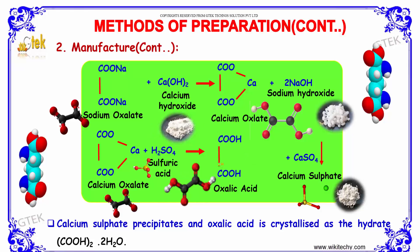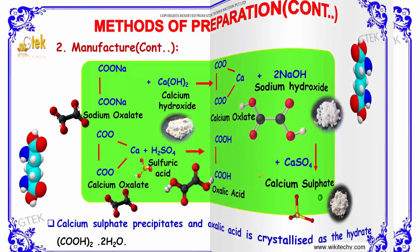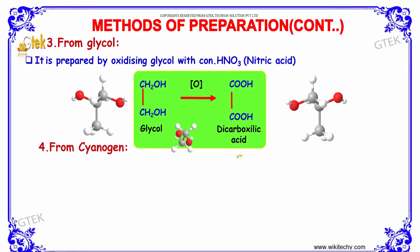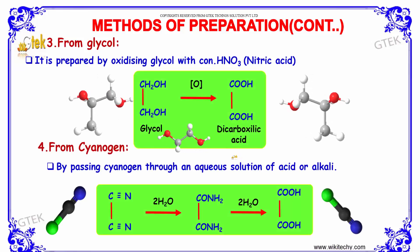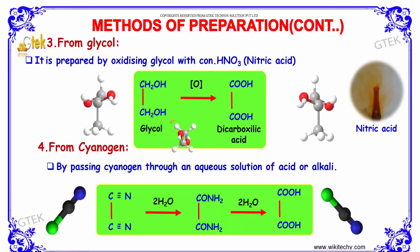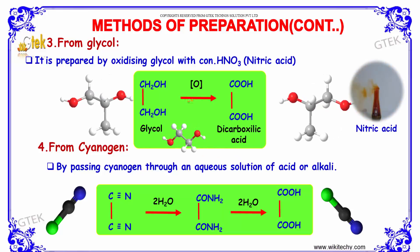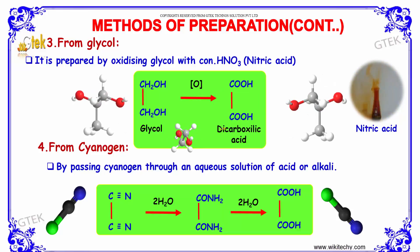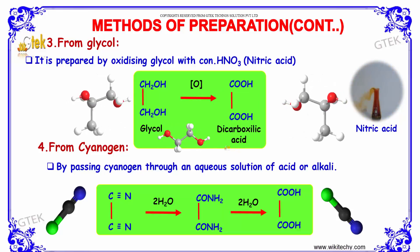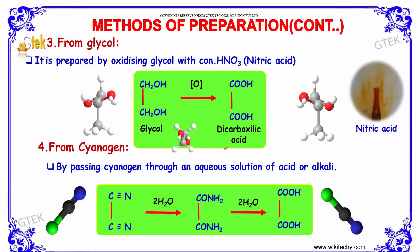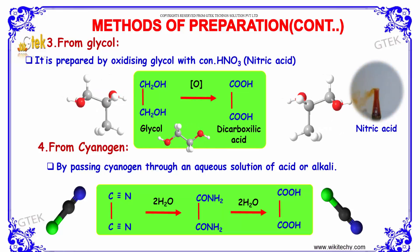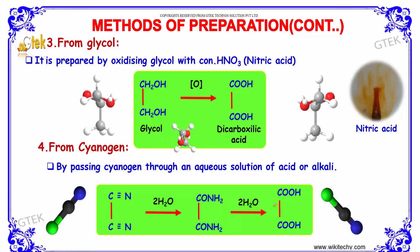Oxalic acid can also be prepared from glycol, that is by oxidizing glycol with concentrated nitric acid, which produces dicarboxylic acid as shown. From cyanogen, if we pass an aqueous solution of acid or alkali through it, we obtain dicarboxylic acids.